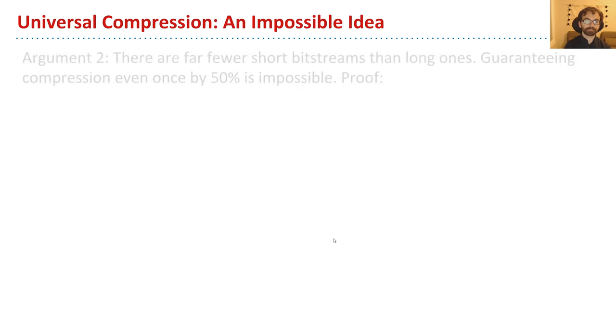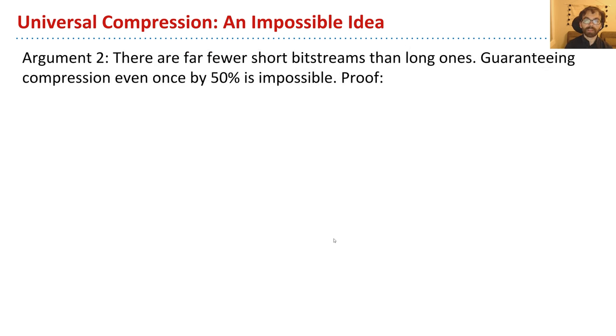Let's see another issue. So there's another argument which basically goes like this. There are far fewer short bitstreams than long ones. And this is actually a pretty deep idea, where we're now starting to sink into this world of compression theory. So guaranteeing compression even once by 50% is impossible. Nobody can write a ZIP program that works just once for some bitstream.